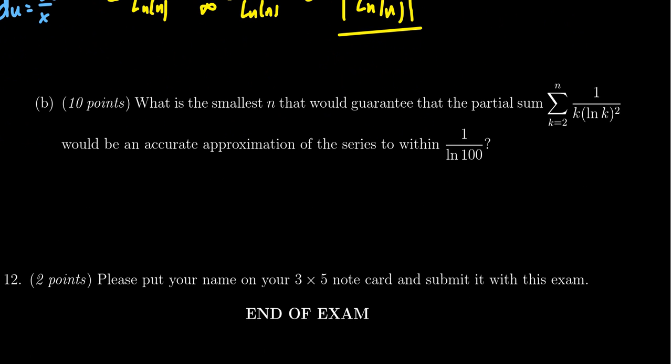So this gets us to the second part of the problem. What is the smallest choice of n that would guarantee that the partial sum, where you take the sum where k equals 2 to n of that same sequence, 1 over k times the natural log of k squared, would be an accurate approximation of the series to within 1 over the natural log of 100?